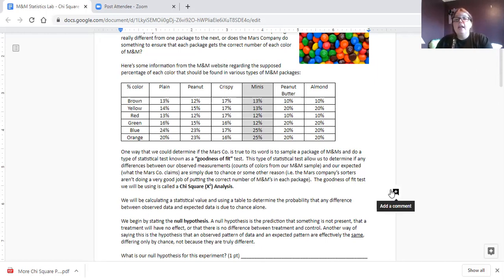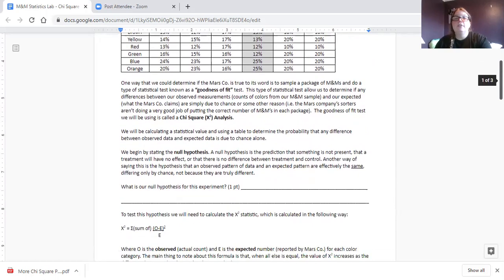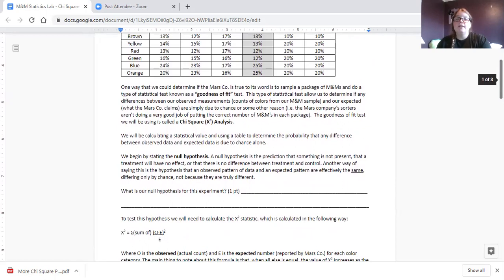So we start by stating a null hypothesis. You remember Mr. Anderson did that too. A null hypothesis, as we've been learning, is the prediction that something is not present, that a treatment will have no effect, or there is no difference between treatment and control. Another way of saying this is the hypothesis that an observed pattern and an expected pattern are effectively the same, differing only by chance, not because they are truly different. So for this first blank, you need to write a null hypothesis. And I'm not going to tell you all the answers for these because I want you to do it. So go ahead right now, pause the video, write your null hypothesis. Remember that there is no effect or something did not happen. If you want examples of what the null hypothesis for these kind of problems are, I would go back to the Mr. Anderson video and see how he wrote his. Got your null hypothesis? Okay, good.